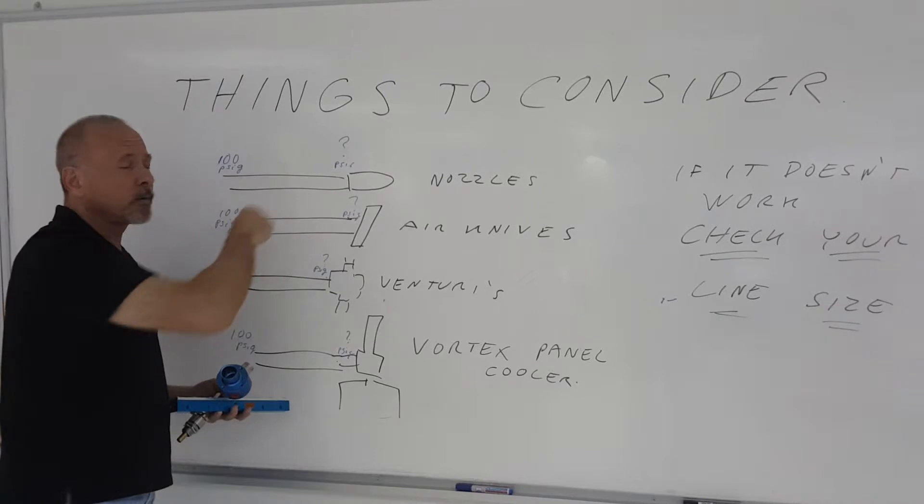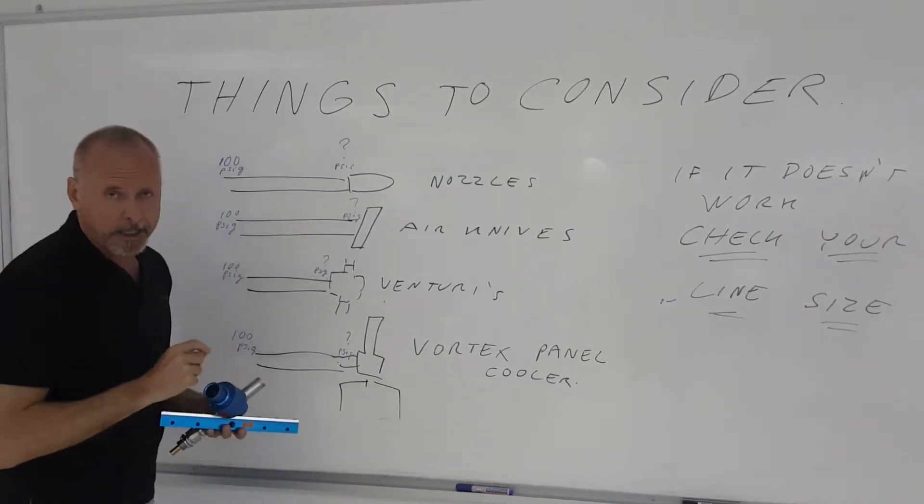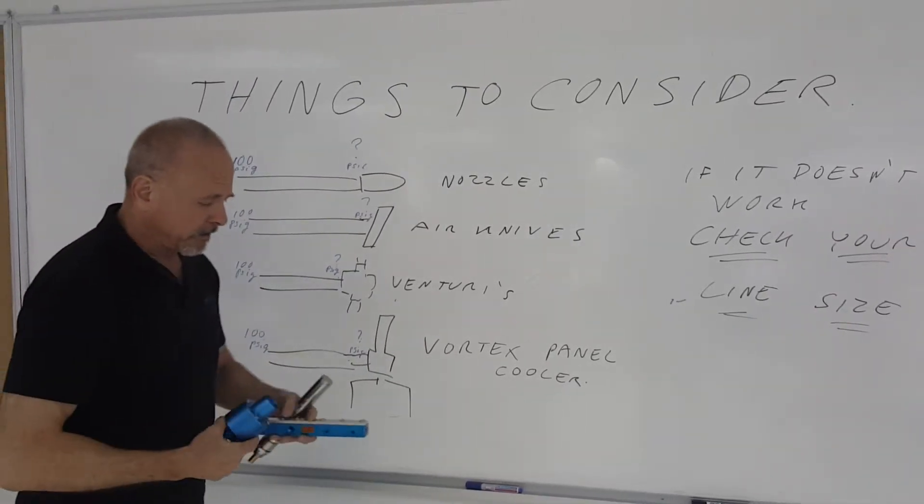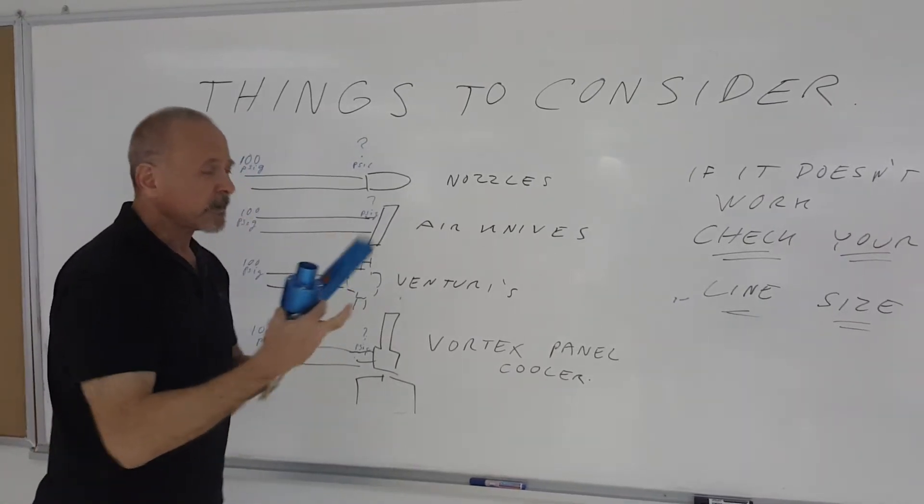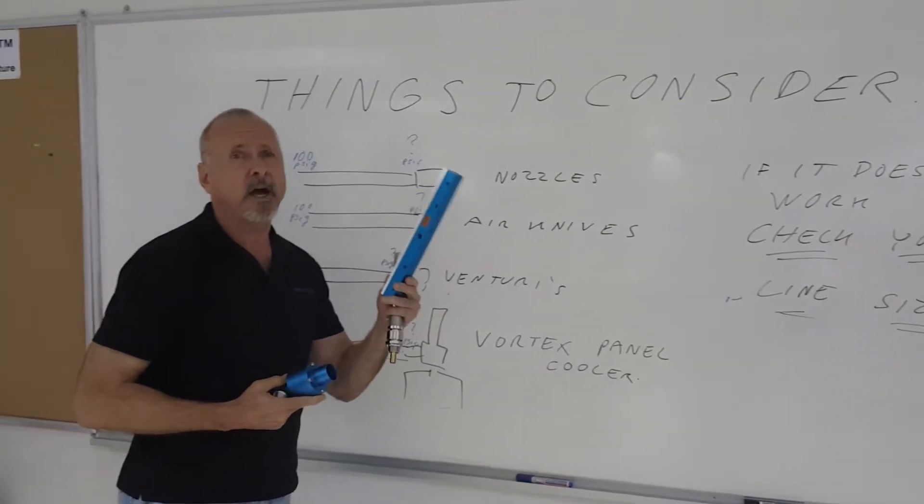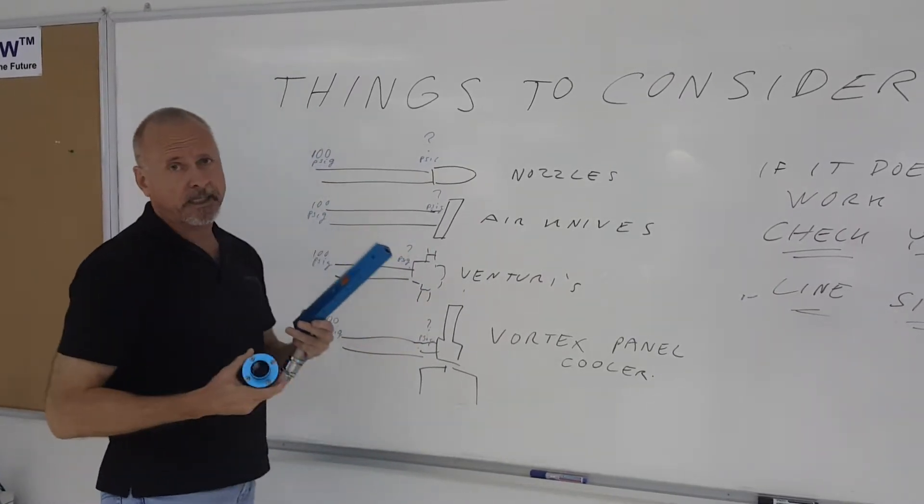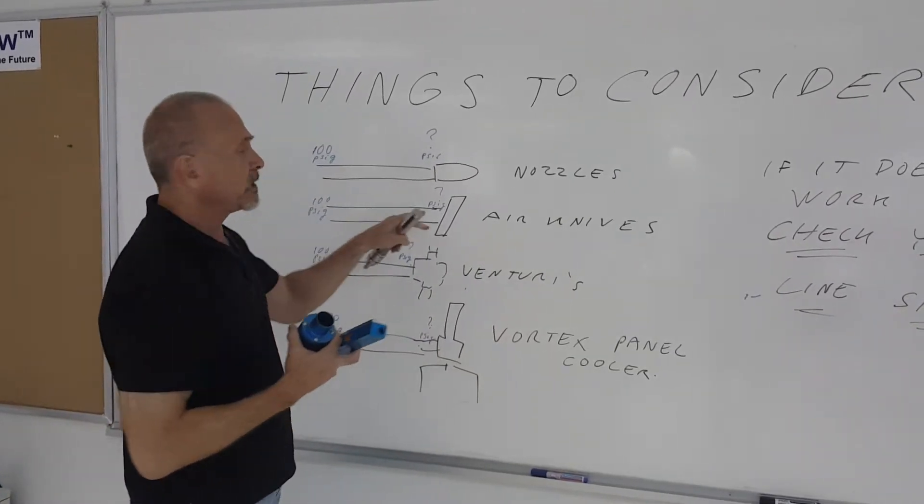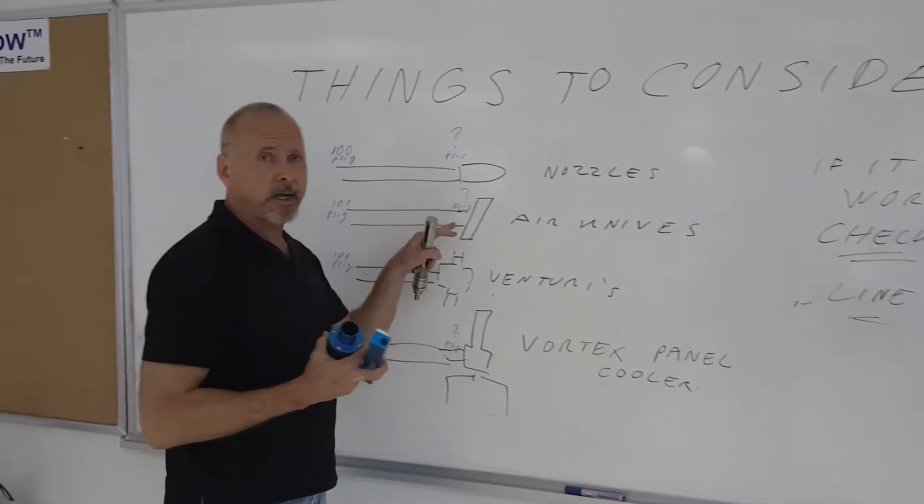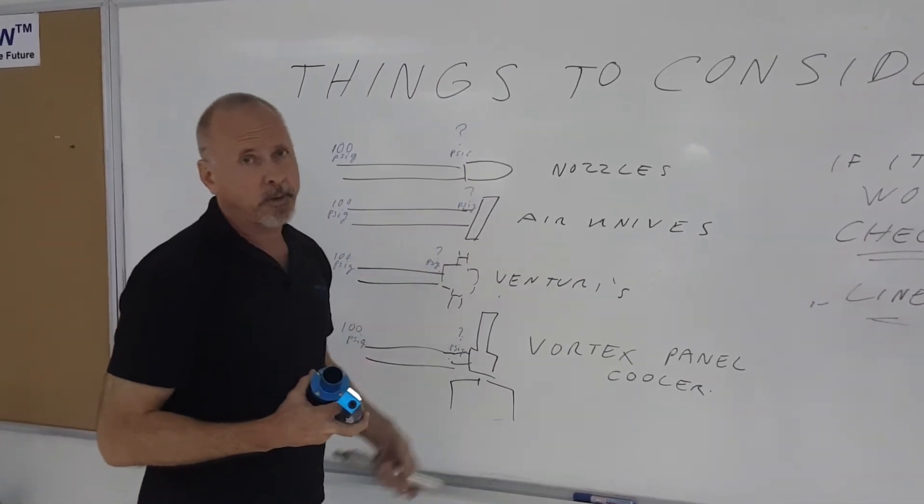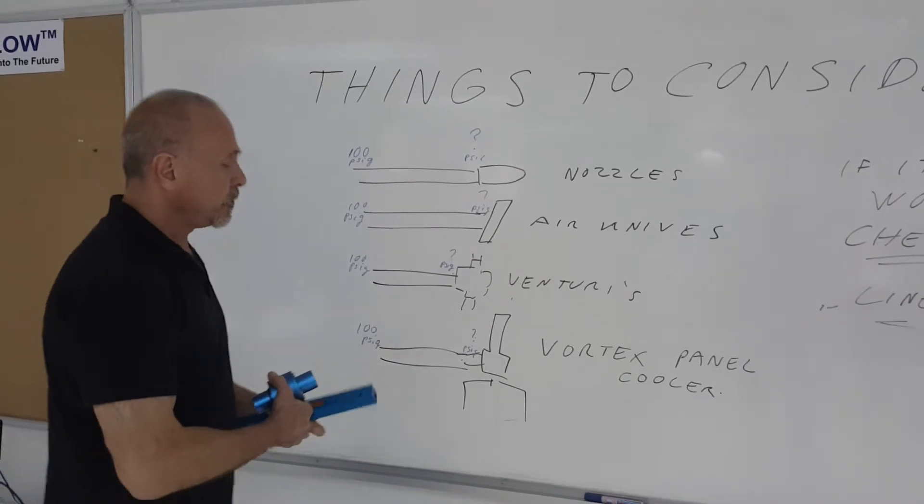Similarly with air knives - I have an air knife here in my hand. An air knife is going to use more air than a nozzle typically, so you have to be a bit more careful on the size of that supply line. Again, you'll have a pressure drop as it goes through that supply. If the line is too small, you're going to have a problem.